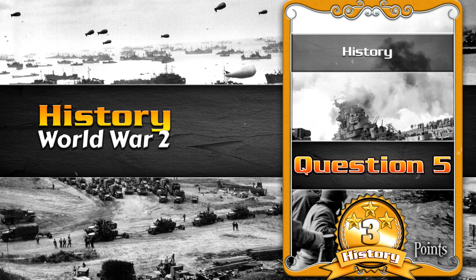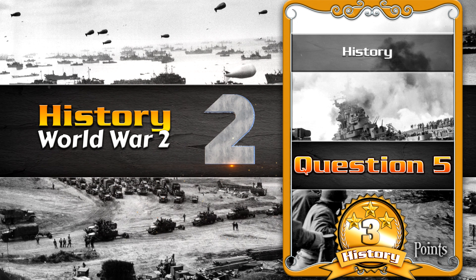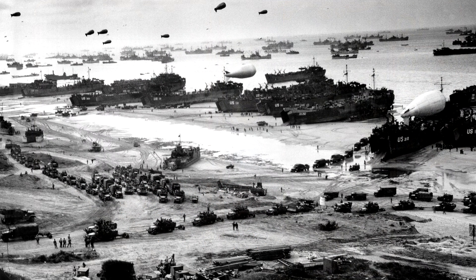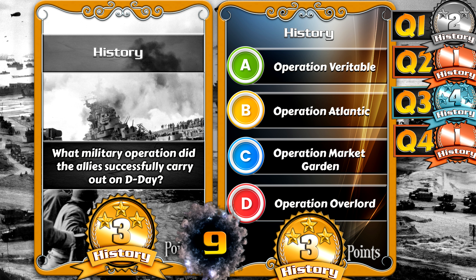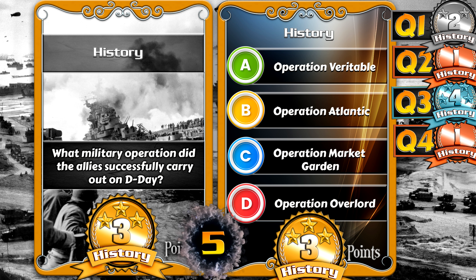Question 5. History. World War II. What military operation did the Allies successfully carry out on D-Day? Operation Veritable. Operation Atlantic. Operation Market Garden. Operation Overlord. The answer is Operation Overlord.